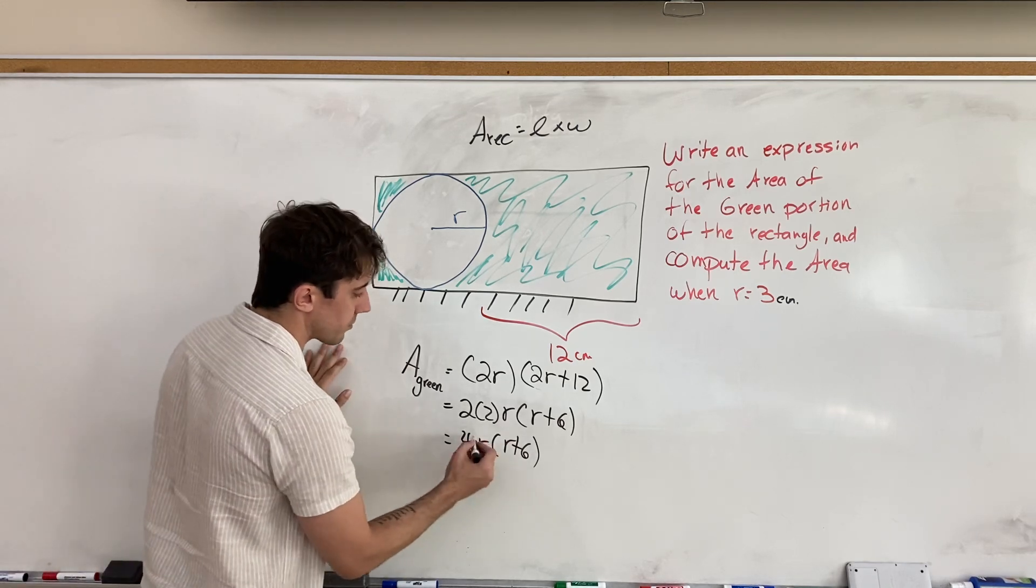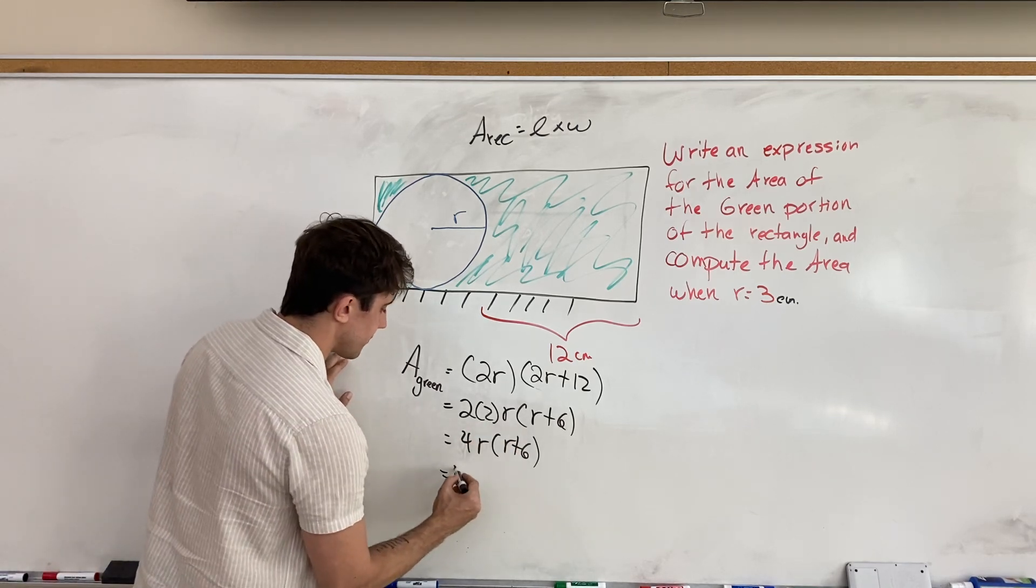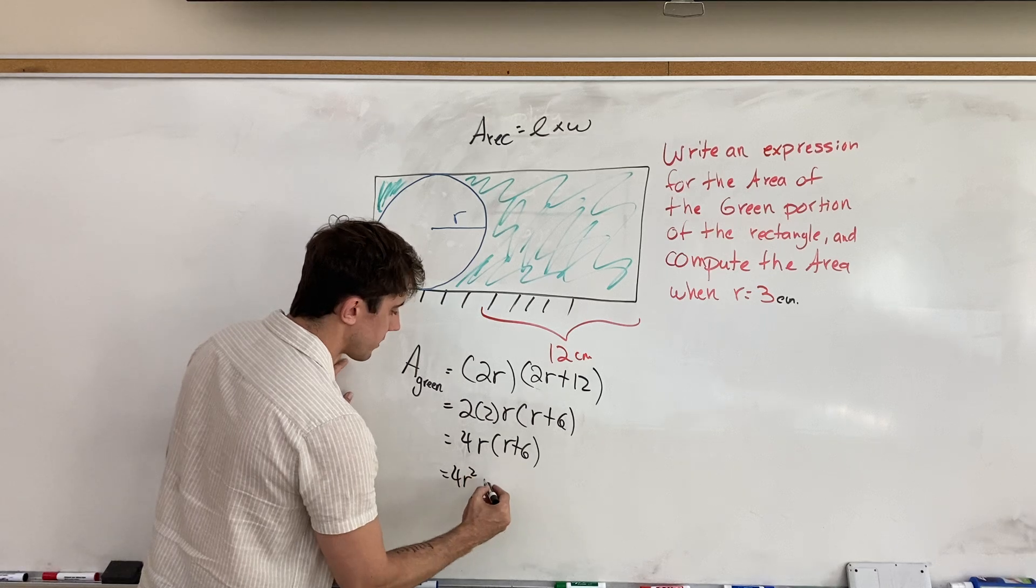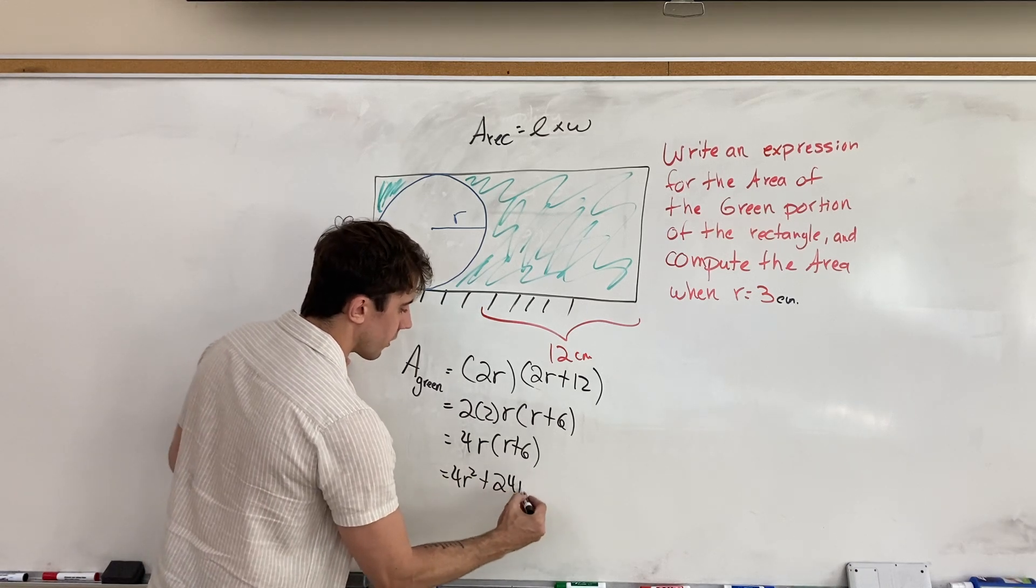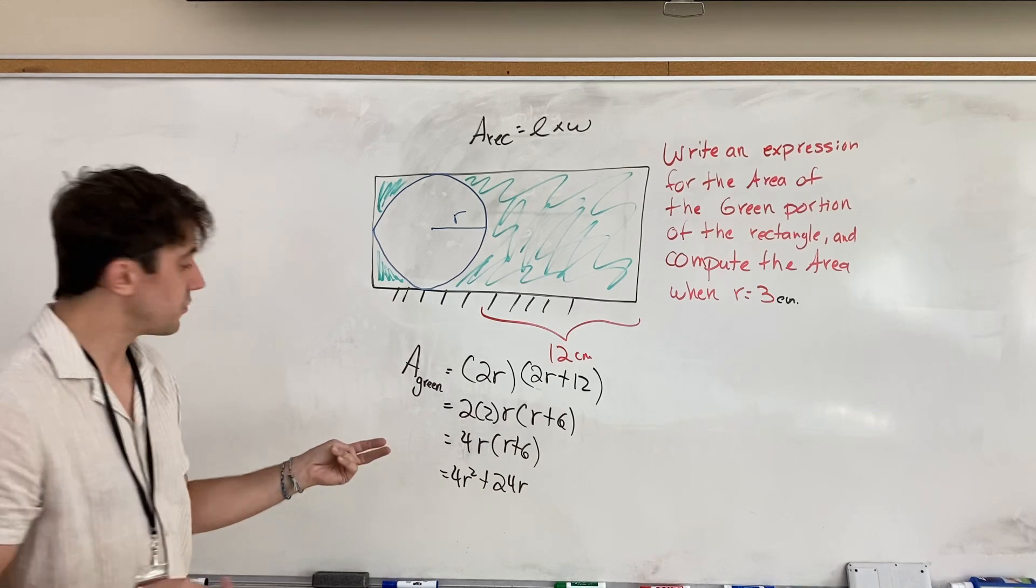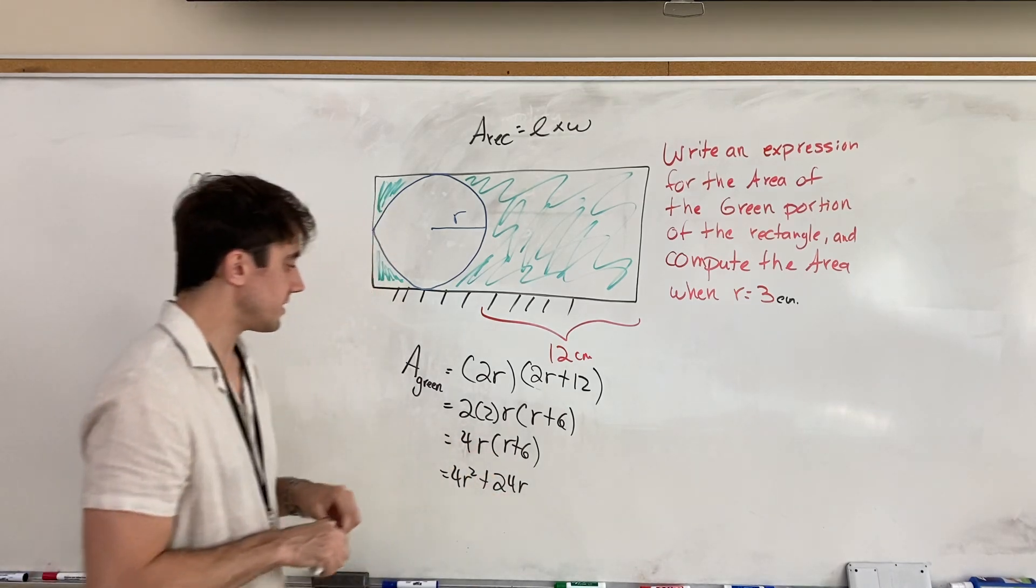If you'd rather, you can multiply through. You can write this as 4r squared plus 24r. Whichever one you find simpler to work with, go ahead and use that one.